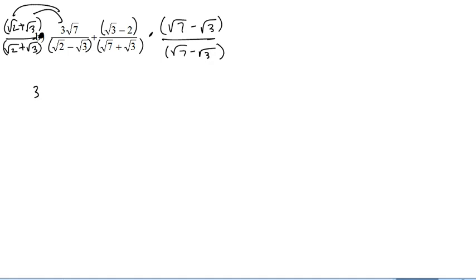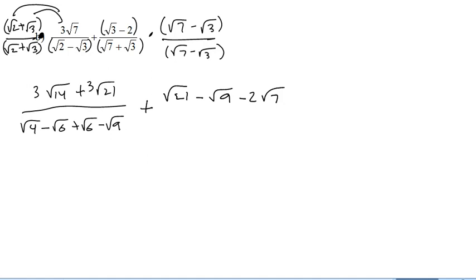So I need to multiply that through, so I get 3 root 14 plus 3 root 21, and that's all over root 4 minus root 6 plus root 6 minus root 9. Plus, and we're going to have to rainbow that top guy through, root 21 minus root 9 minus 2 root 7 plus 2 root 3, all over root 49 minus root 21 plus root 21 minus root 9.